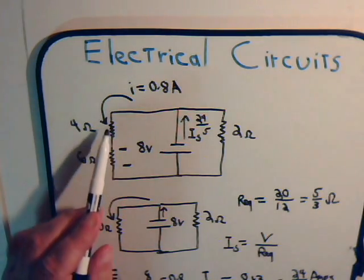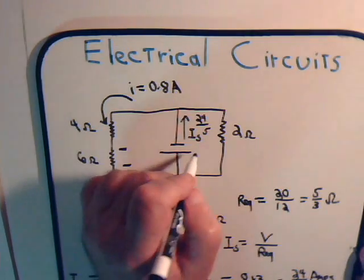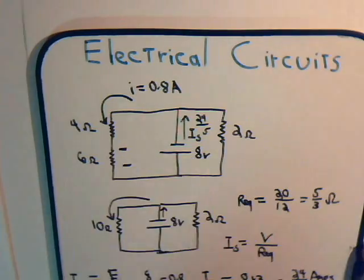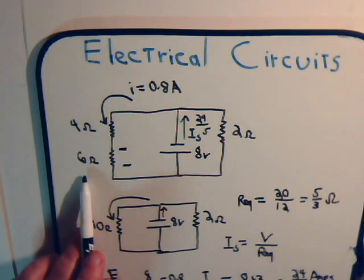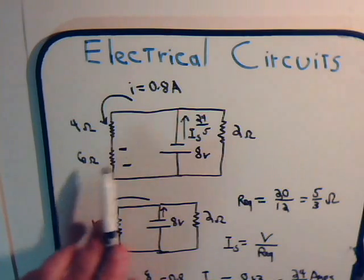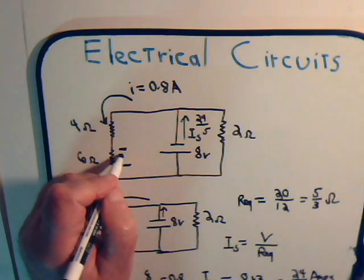So that's going to be the same for each of these. So here, let's just put the 8 volts on this side. The voltage drop across this resistor right here is going to be 6 times 0.8, or that would be 4.8 volts.